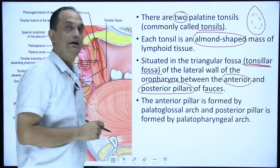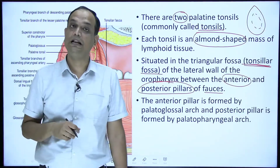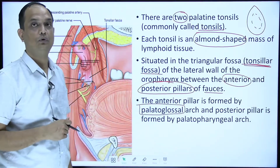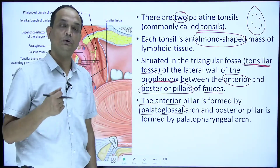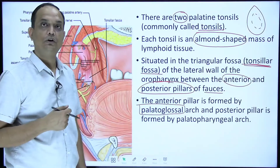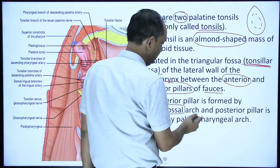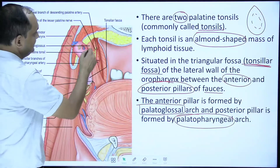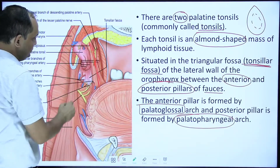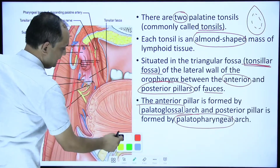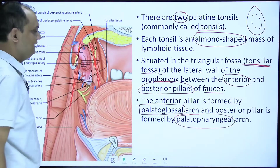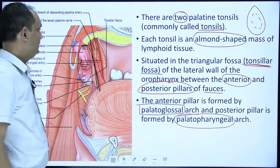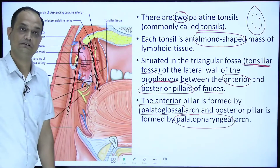The anterior pillar is formed by the palatoglossus muscle. As discussed in the oropharynx class, the tonsillar fossa has a palatoglossal arch anteriorly and a palatopharyngeal arch posteriorly. In the diagram, you can see the anterior arch and the posterior arch with a gap in between that contains the tonsil — lined anteriorly by the palatoglossal arch and posteriorly by the palatopharyngeal muscle.